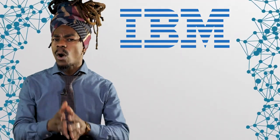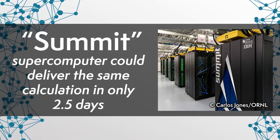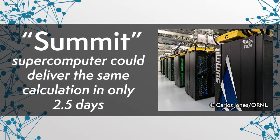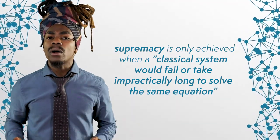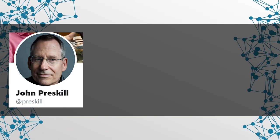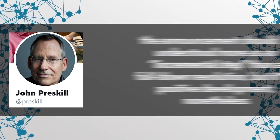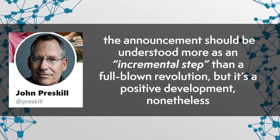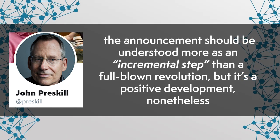The claim was immediately countered by IBM, a company that coincidentally also works on quantum computers, who said that their Summit supercomputer could deliver the same calculation in only 2.5 days. Even though 200 seconds seems much faster than 2.5 days, it effectively erases the supremacy claim. According to the definition, supremacy is only achieved when a classical system would fail or take impractically long to solve the same equation. By supercomputer standards, 2.5 days would not be considered impractically long for complex computation. According to John Preskill, a physicist at Caltech who famously coined the term quantum supremacy, the announcement should be understood more as an incremental step than a full-blown revolution, but it's a positive development nonetheless.